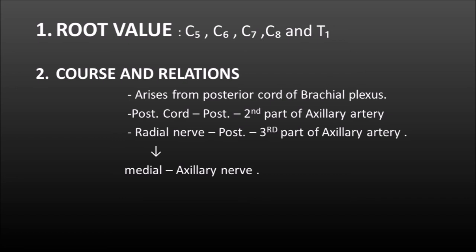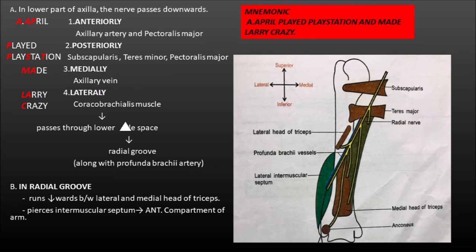The posterior cord lies posterior to the second part of the axillary artery and the radial nerve lies posterior to the third part of the axillary artery, which means it lies medial to the axillary nerve. In the lower part of the axilla, the nerve passes downward with the following relations: anteriorly the axillary artery and pectoralis major; posteriorly subscapularis, teres major and latissimus dorsi; medially the axillary vein; and laterally the coracobrachialis muscle. The radial nerve then passes through the lower triangular space, enters the radial groove along with the profunda brachial artery, and runs downwards between the lateral and medial heads of triceps. At the lower end of the radial groove, it pierces the lateral intermuscular septum and enters the anterior compartment of the arm.